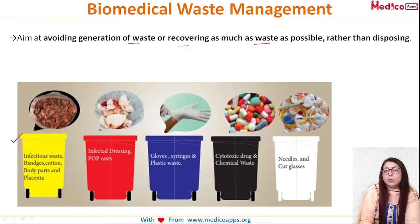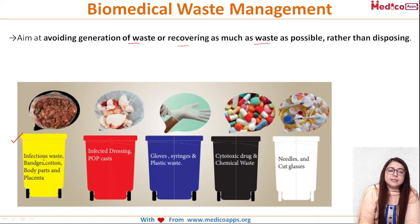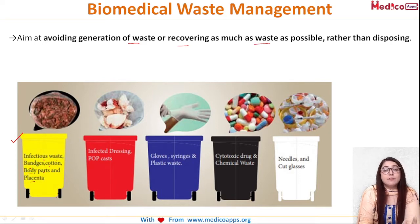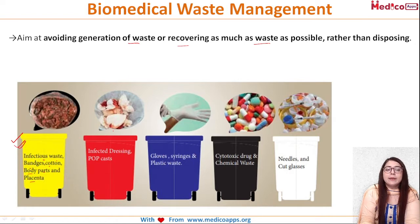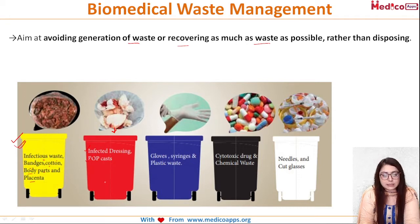Here you can see the yellow color bag or yellow bin. What we dispose here includes infectious waste, bandages, cotton, body parts, and placenta — that is the first option. Human tissue is disposed of in the yellow bag or yellow bin.